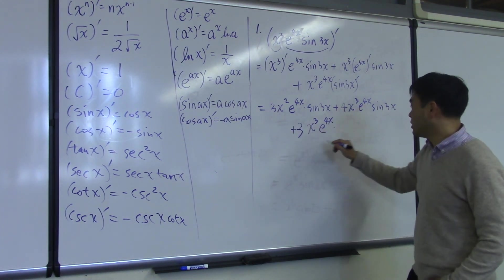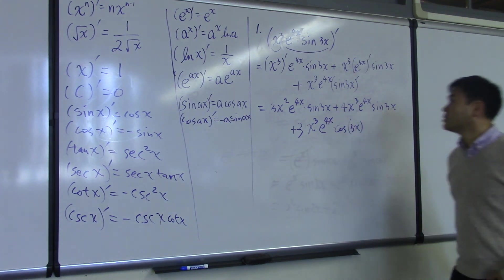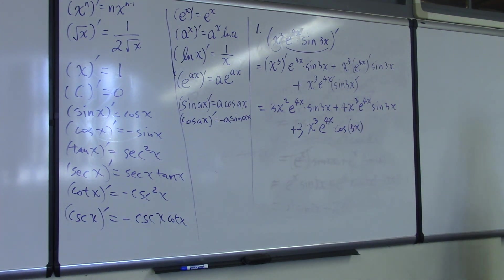So I want to put the numbers in front. 3 cosine 3x. Okay, that's how it goes.